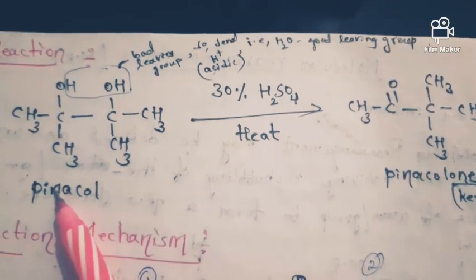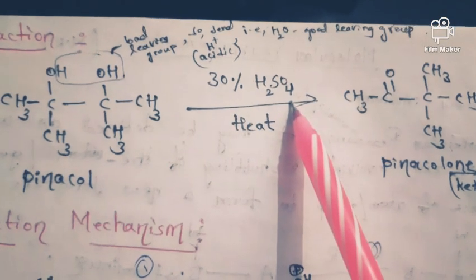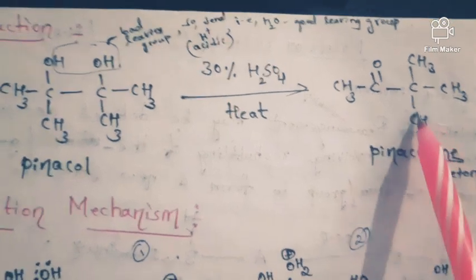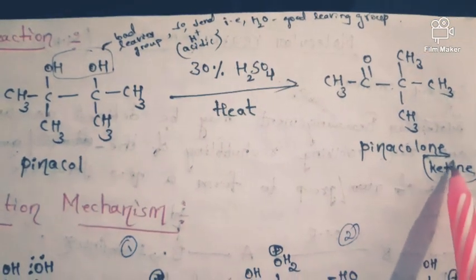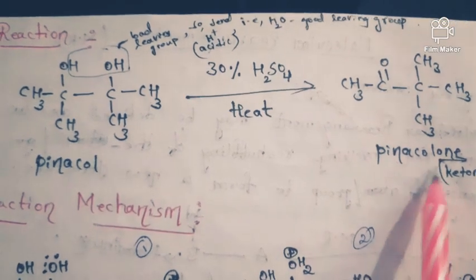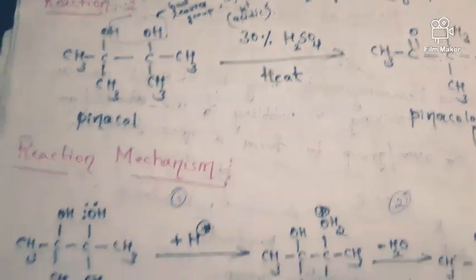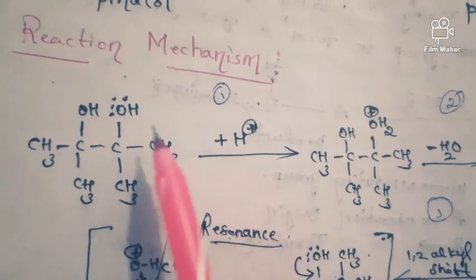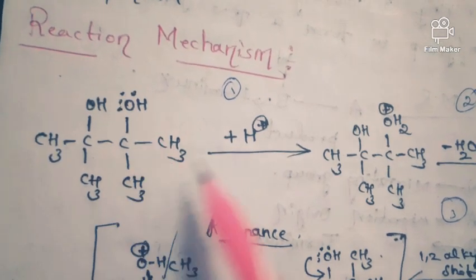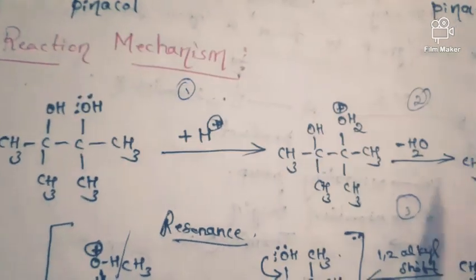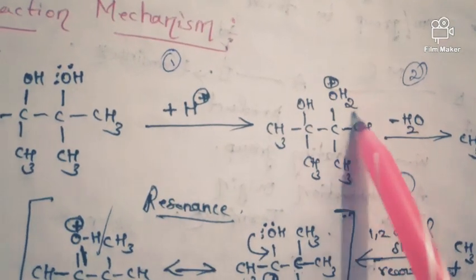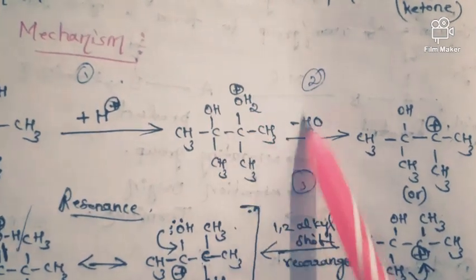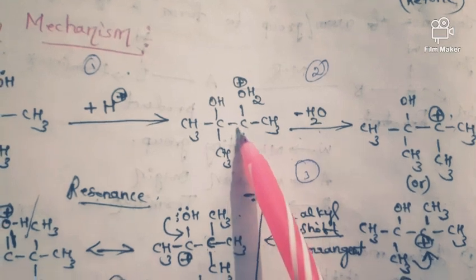Whenever the pinacol is treated with acid, we are going to get ketones especially. This is the pinacol and this is the pinacolone — which is the ketone. In the mechanism: in acidic conditions, the OH abstracts a hydrogen to give OH2+. This is a very good leaving group, so the water gets lost, and this carbon gets a positive charge.